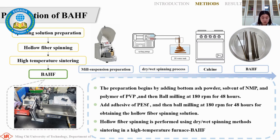The hollow fiber spinning solution is processed using a dry-wet spinning method, followed by sintering in a high-temperature furnace.